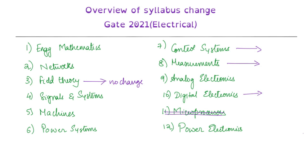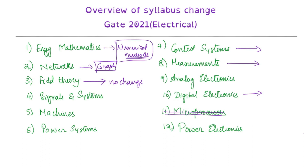In engineering mathematics, numerical methods has been removed — this is one major good change. In networks, graph theory has been removed, which is also a good change. But in signals and systems we have bad news: the Fourier series and the Fourier transform are now also present for discrete time signals. Previously they were only for continuous time signals; now discrete time signals is also in the syllabus.